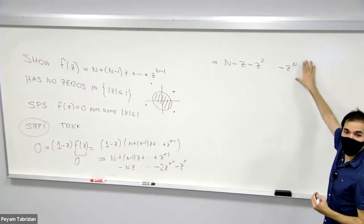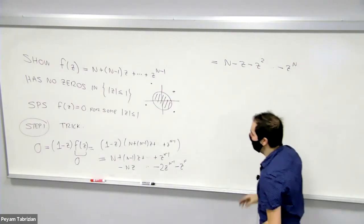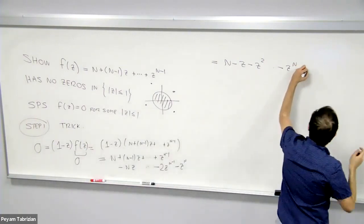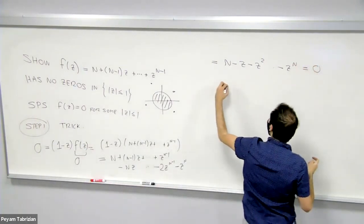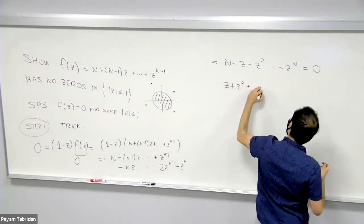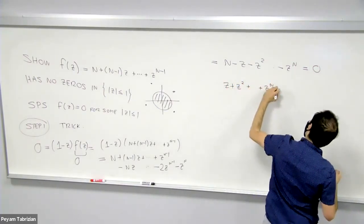But now remember, this expression here is equal to zero. So in the end, we get this beautiful identity, which says that if you take z + z^2 + ... + z^n, you actually get n.